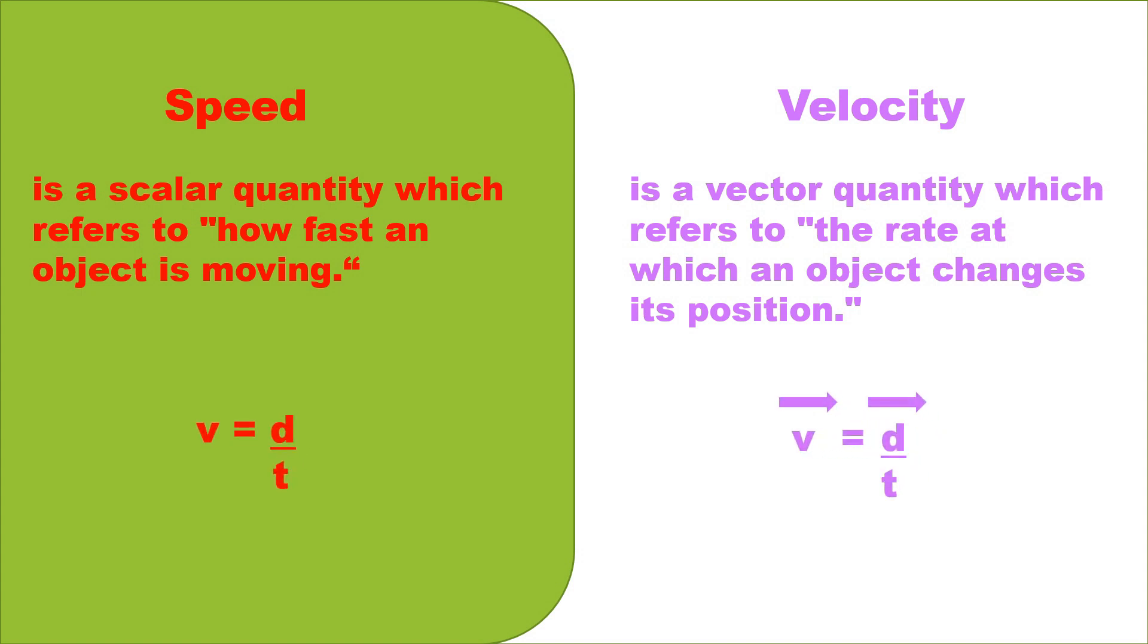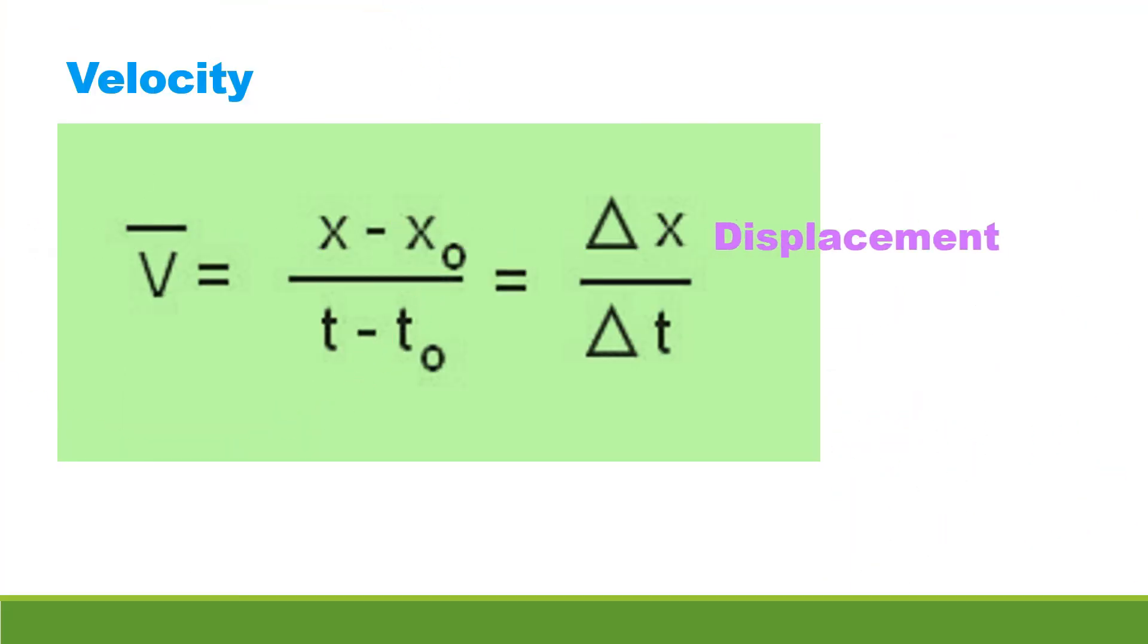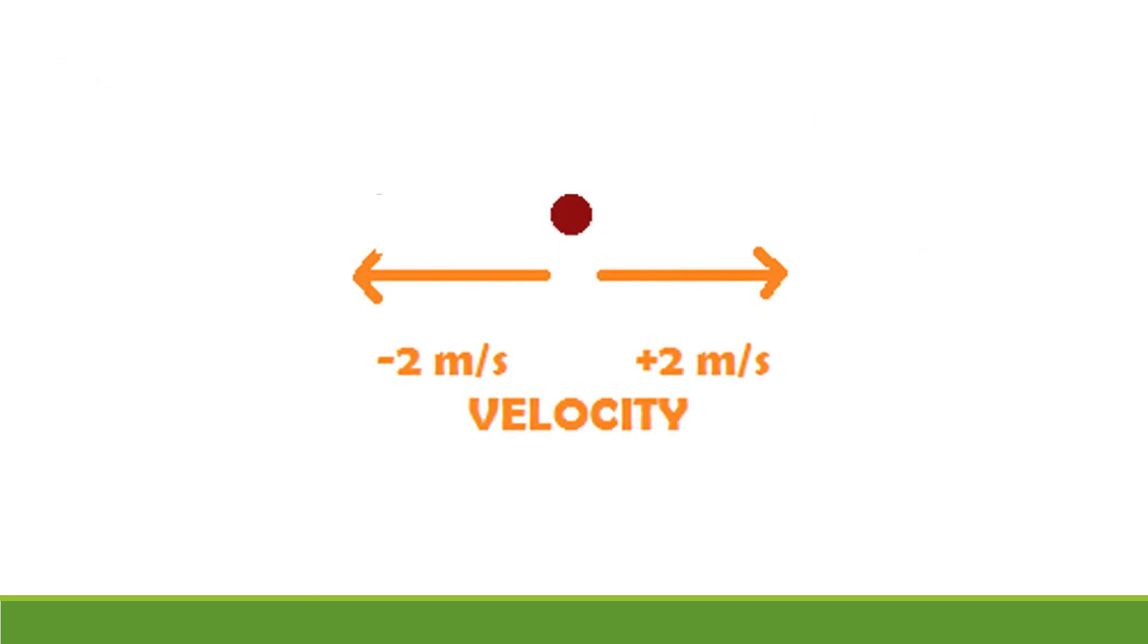Looking at their equations, speed is distance over time, while velocity is displacement over time. This is displacement, the change of position from point A to point B. Looking at the equation for velocity, we find final position minus initial position over time. That makes it possible for velocity to have a negative sign because of its direction.